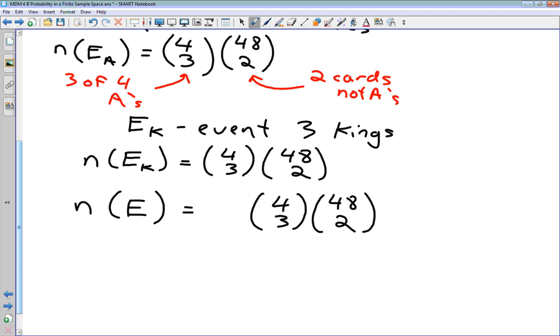Now, how many possibilities are there for these three cards that can be exactly the same? Well, we've got ace, two, three, four, five, six, seven, eight, nine, ten, jack, queen, king. That's thirteen possibilities.